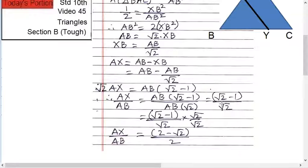Solve this root 2 now. Rationalize. So, root 2 minus 1 upon root 2 into root 2 by root 2. So this becomes 2 multiplied inside. So, 2 minus root 2 upon 2. AX upon AB equals 2. So, that is the answer.